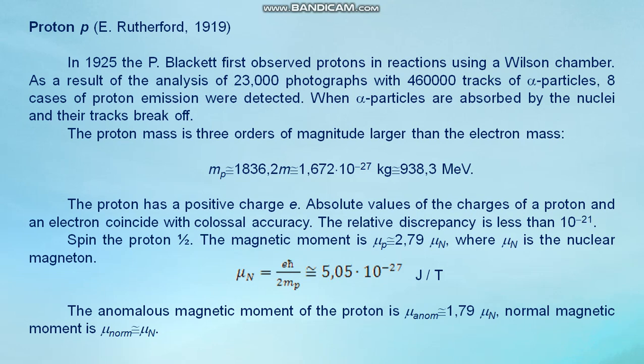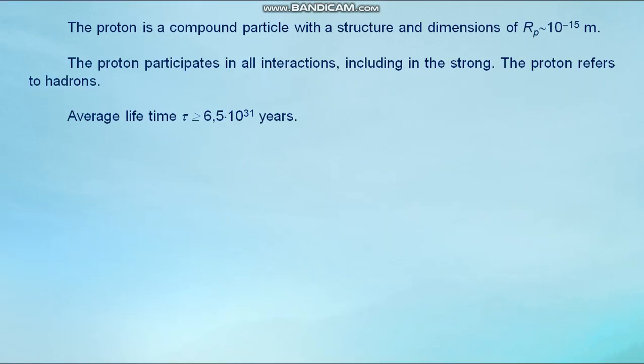Normal magnetic moment is μ_normal equals μₙ. The proton is a compound particle with a structure and dimensions of Rₚ equals 10⁻¹⁵ meter. The proton participates in all interactions including the strong. The proton refers to hadrons. Average lifetime τ greater than or equals 6.5×10³¹ years.